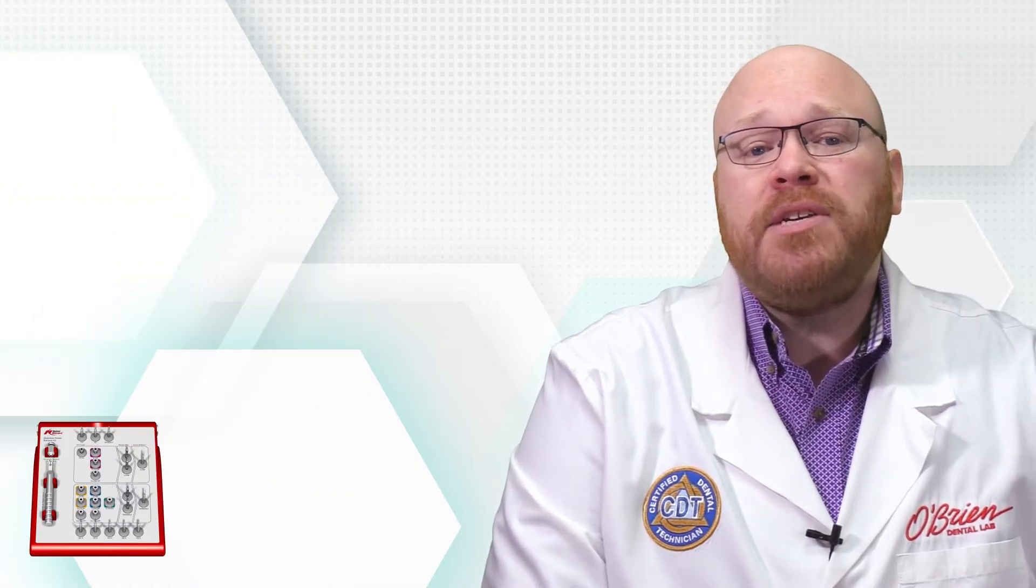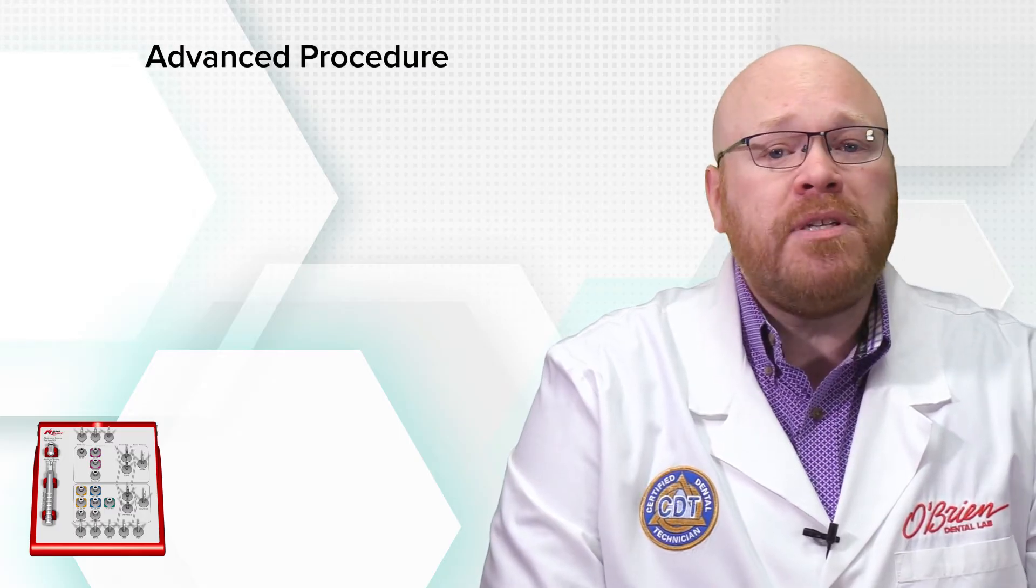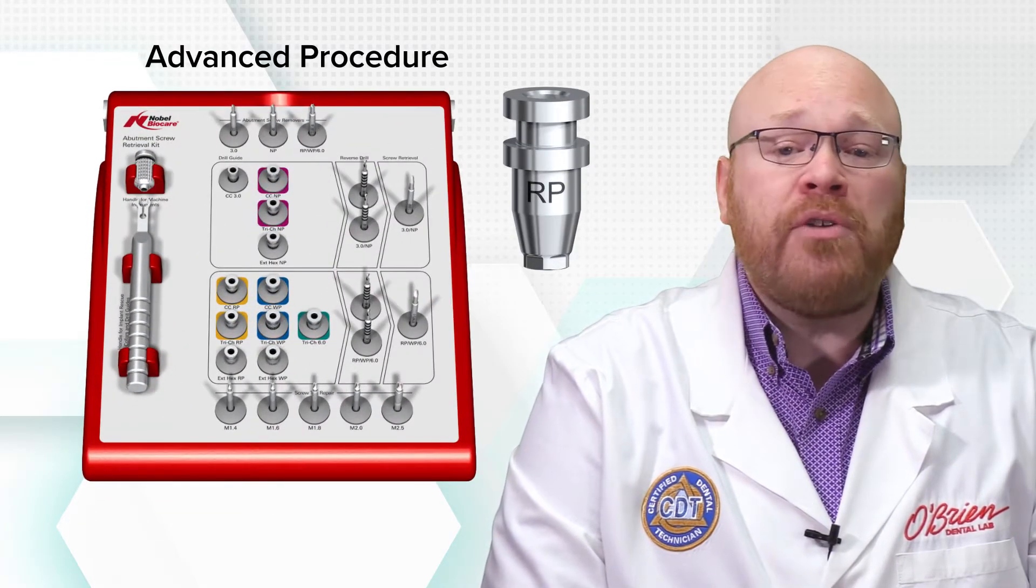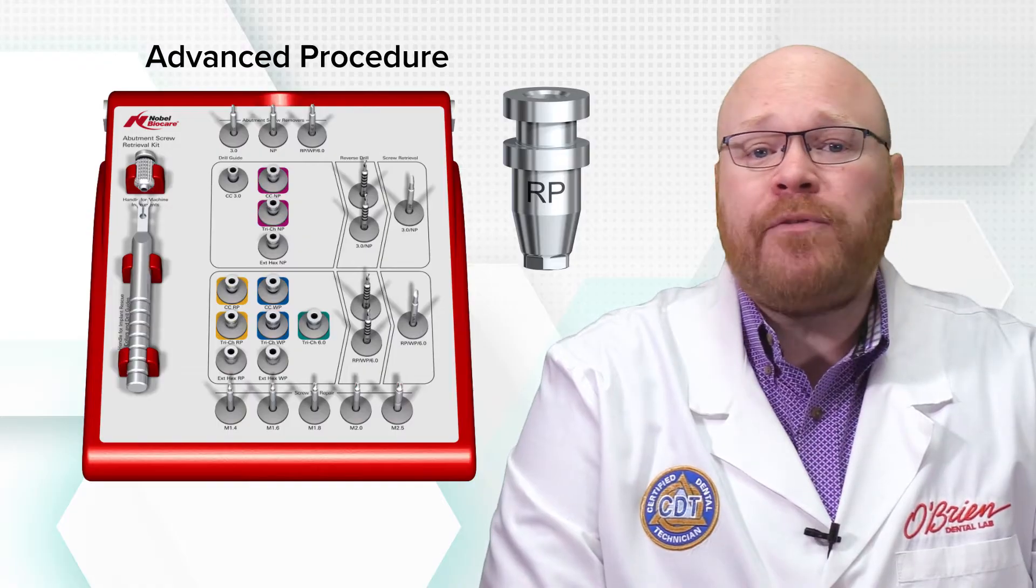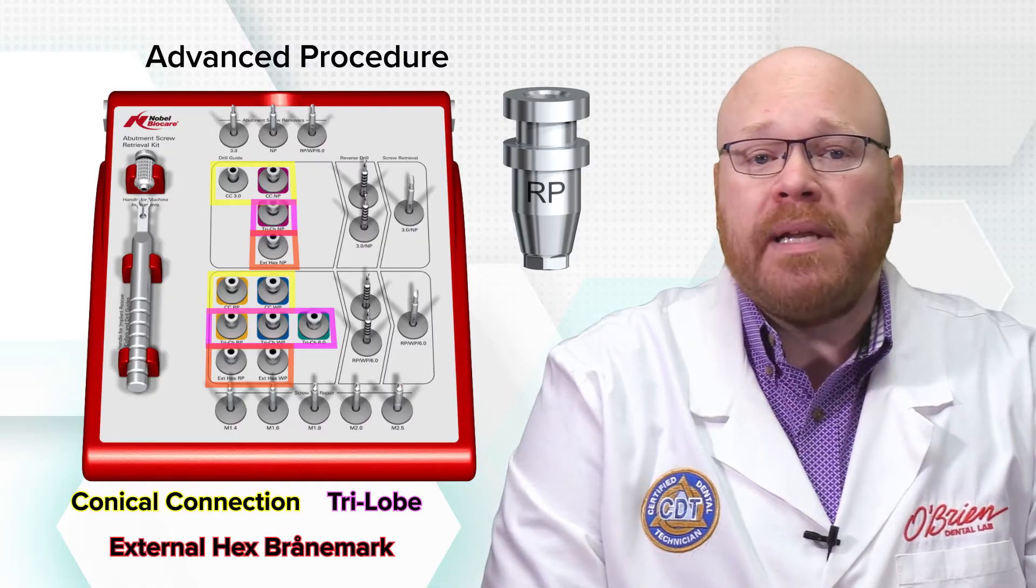If you've tried the simple procedure but you aren't able to get the screw to rotate, then you can use the advanced procedure. The first thing you'll do here is select the appropriate rescue drill guide. There's a guide for each platform size of the conical connection, trilobe, and external hex brand mark implants.